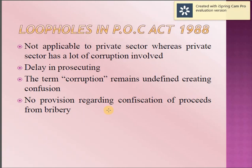As we know, everything has some loopholes. Let's see the loopholes in the Prevention of Corruption Act 1988. It is not applicable to the private sector, where a lot of corruption is involved. There is a delay in prosecution, and the term 'corruption' remains undefined, creating confusion. There is no given provision in the 1988 Act regarding the definition of corruption, and also no provision regarding the proceeds from bribery.